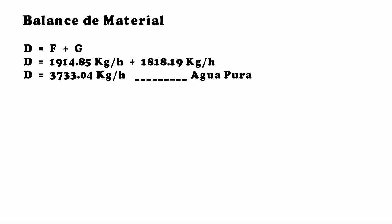The result is D = 3733.04 kg/h. This is the pure water production rate.